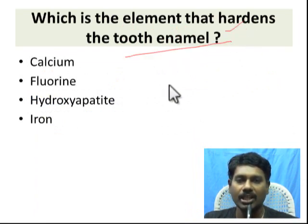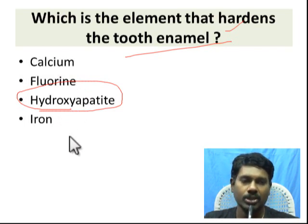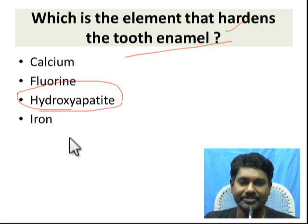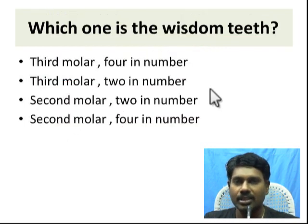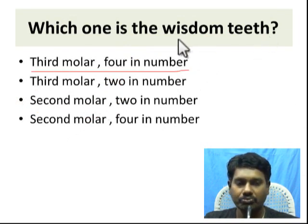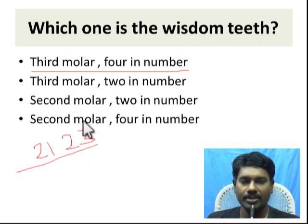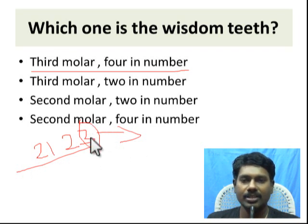Tooth enamel is made strong and harder by hydroxyapatite. If the question asks about hydroxyapatite and gives options of calcium vs. fluorine, the major component is calcium. Regarding wisdom teeth — the dental formula is 2-1-2-3 (incisors, canine, premolars, molars). The last molar is the wisdom tooth, so the wisdom tooth is the third molar.